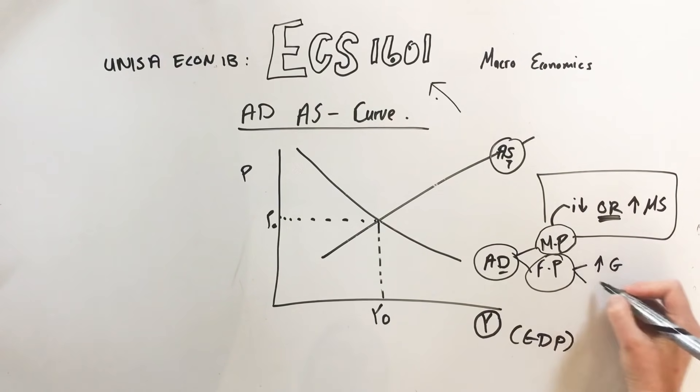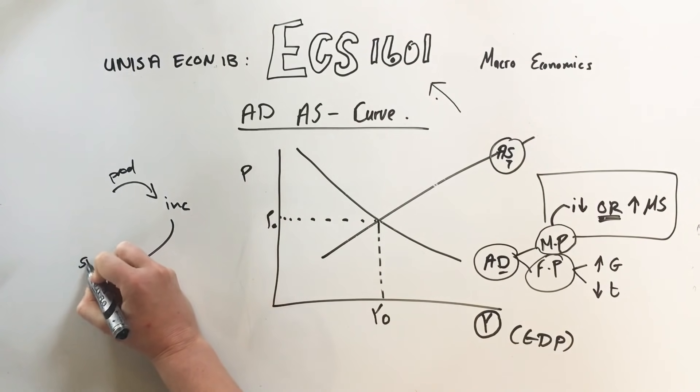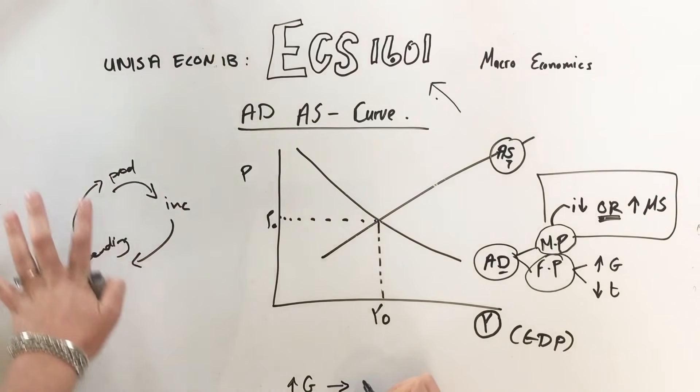What will this do? This will influence that lovely circle we discussed where we have production, income, and spending. So if government expenditure goes up, naturally the whole economy goes up, so the output will increase.